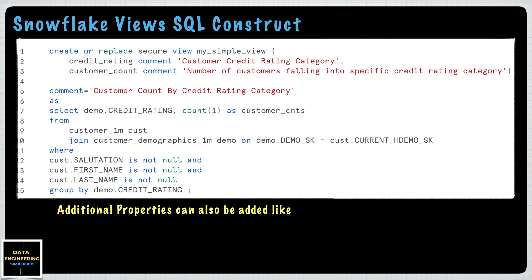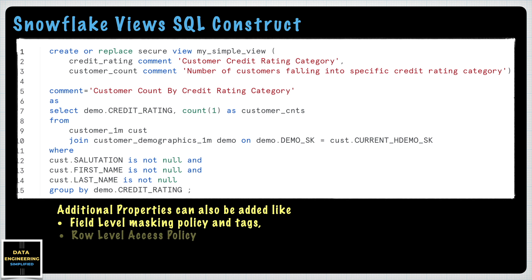There are additional properties which can also be added — for example, you can add field-level masking policies as well as tags. You can also have row-level access policies for the view, add tags, and add copy grant properties. We will cover these properties in a separate video.